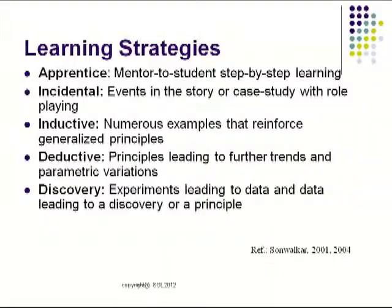In the brain-based adaptive learning system that we have developed, we have learning strategies and there are five different learning strategies, namely apprentice, incidental, inductive, deductive and discovery. And that is very important for an adaptive learning system to have several different learning strategies.